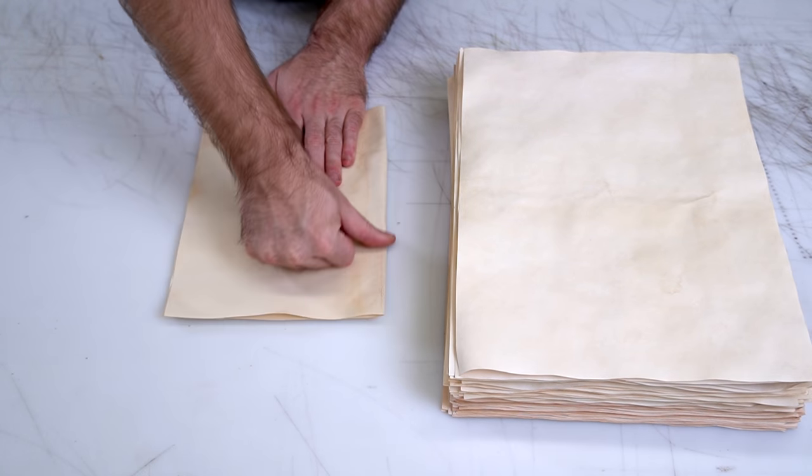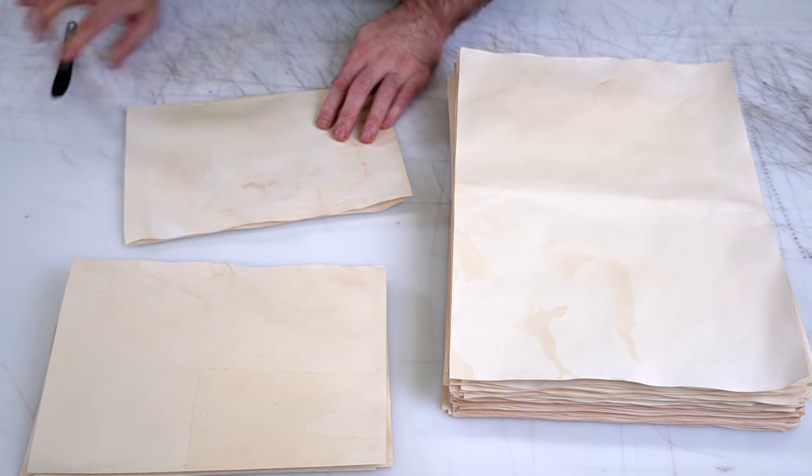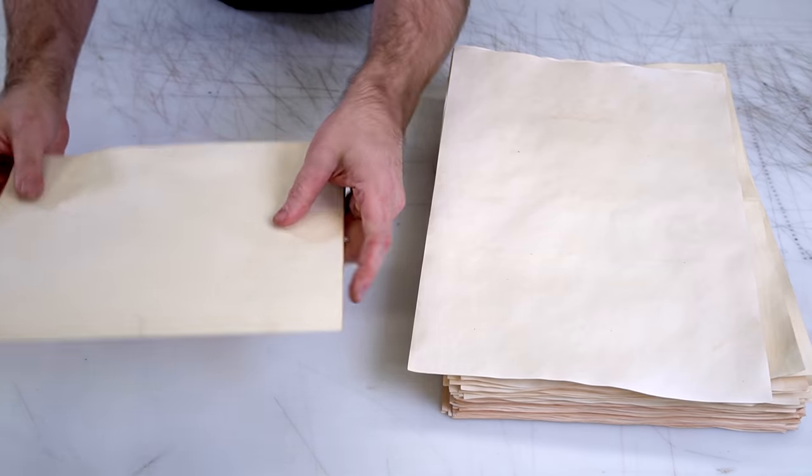So once we have the pages all dried out, we're going to fold them in half and put them into signatures of 6 to 7 pages. I think I did 6 here, which may be, in hindsight, a little too many.